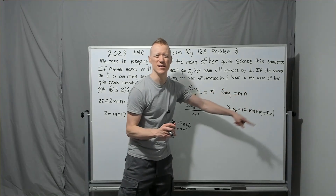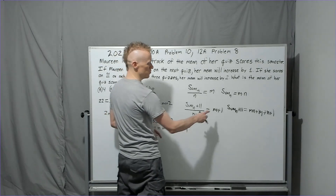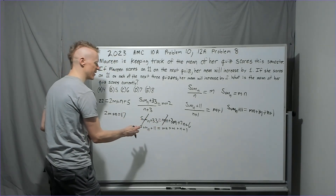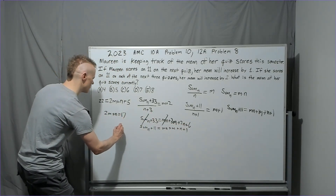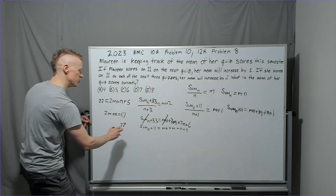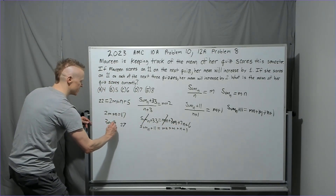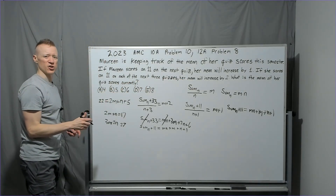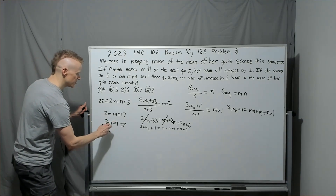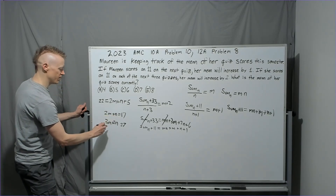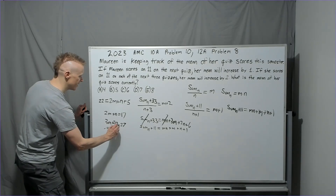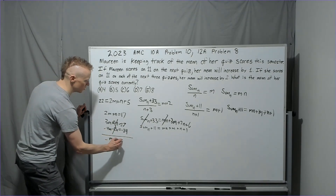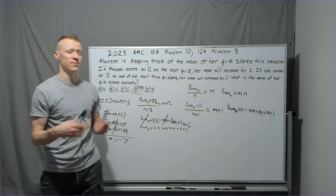To solve: multiply 2m + n = 17 by -2 to get -4m - 2n = -34. Adding to 3m + 2n = 27: the n terms cancel, giving -m = -7, so m = 7. The current mean of Maureen's quiz scores is 7. That's the answer, and we're done with this problem set.